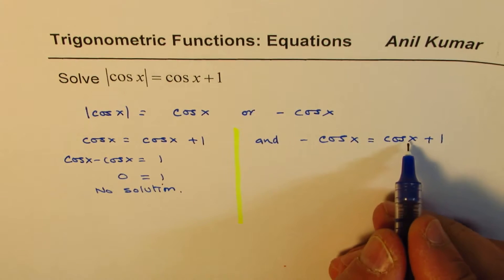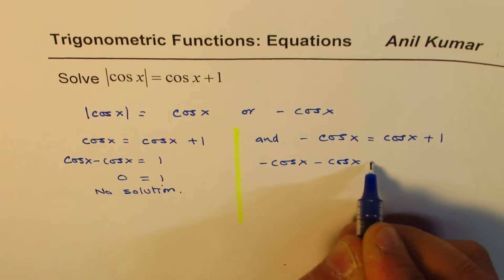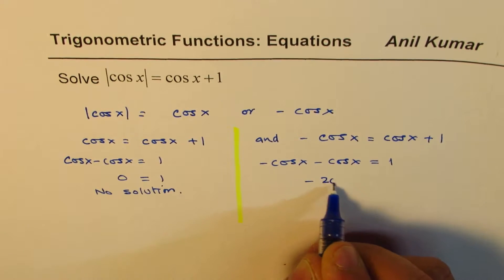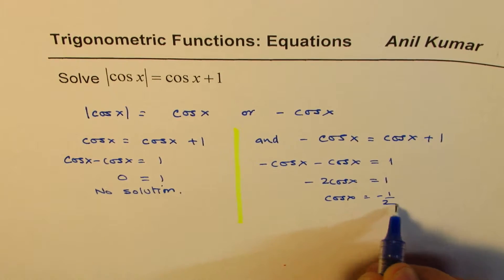On the other hand, if I bring this on the left side, we have minus cos x minus cos x equals 1, so minus 2 cos x equals 1, and cos x equals minus half.